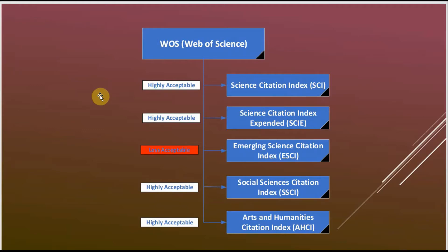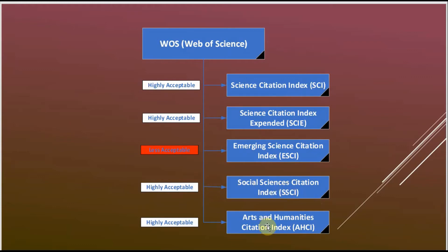It is very important to note that SCI is the highest accepted, top-most rated category of journals. SCIE is also highly acceptable and top-rated. ESCI is not considered good — the content is sometimes very poor, so it is less acceptable. SSCI and AHCI are also highly acceptable in the field of social science and arts and humanities respectively.